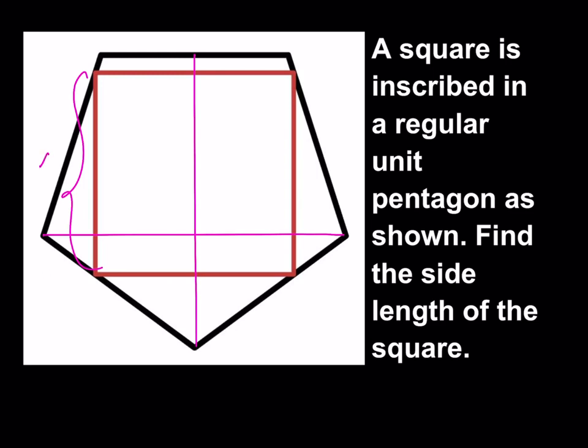If the side length of the square is x, from symmetry, this is going to be a midpoint, and this is going to be a midpoint. So this length is going to be half of x, and this is going to be half of x. Let's call this length y — we don't know what it is yet. We need some angles, and for the solution of this problem I'm going to be using some trigonometry, along with a little bit of geometry and algebra as well.